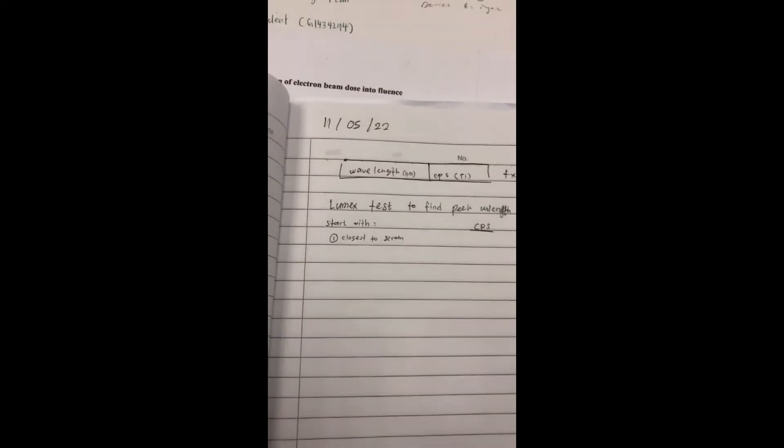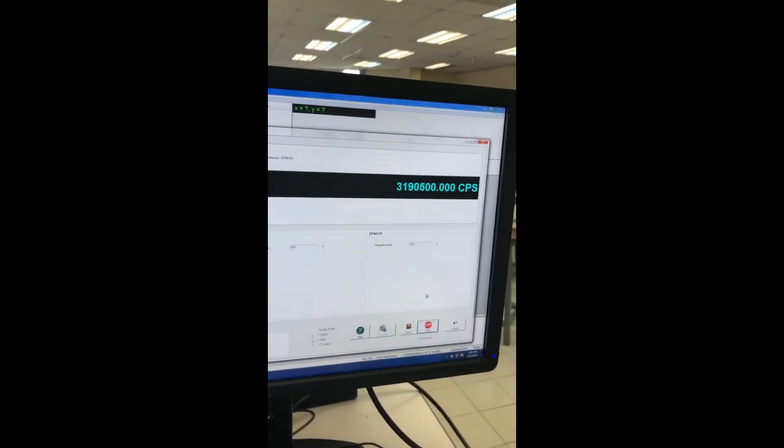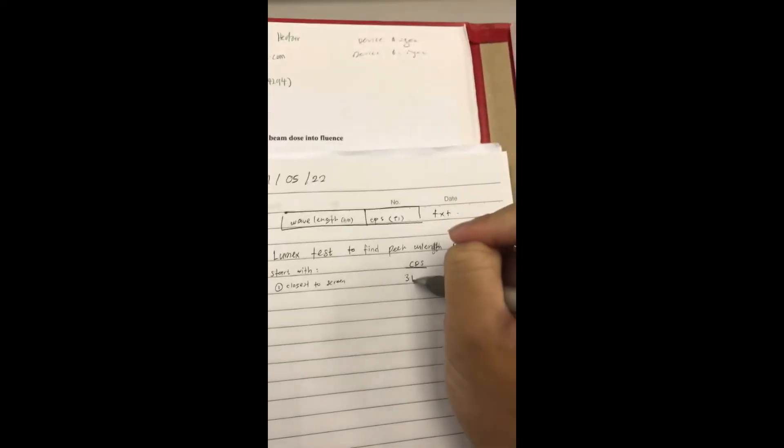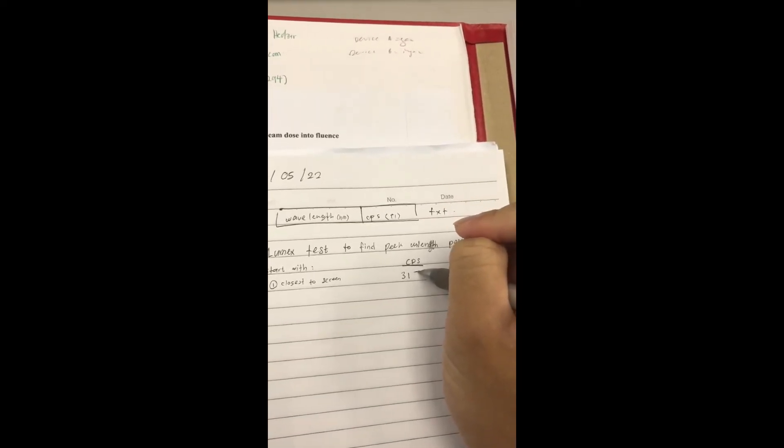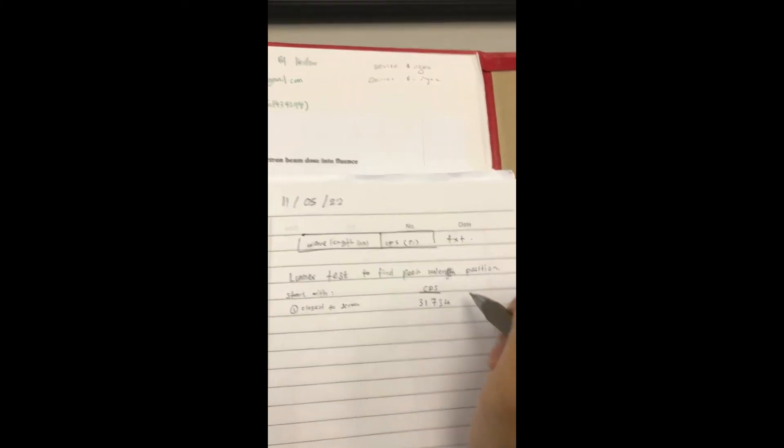Then after that, you need to jot down what the value is. For example, right there is around 317,340.00.